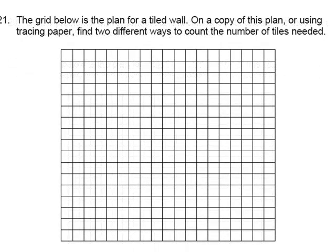Question 21. This is one of the most important parts of this section, I would say. On a copy of this plan, or using tracing paper, find two ways to count the number of tiles needed. So deliberately, the measurements aren't put on here, and students will count. They'll count and hopefully get 19 across and 17 down.